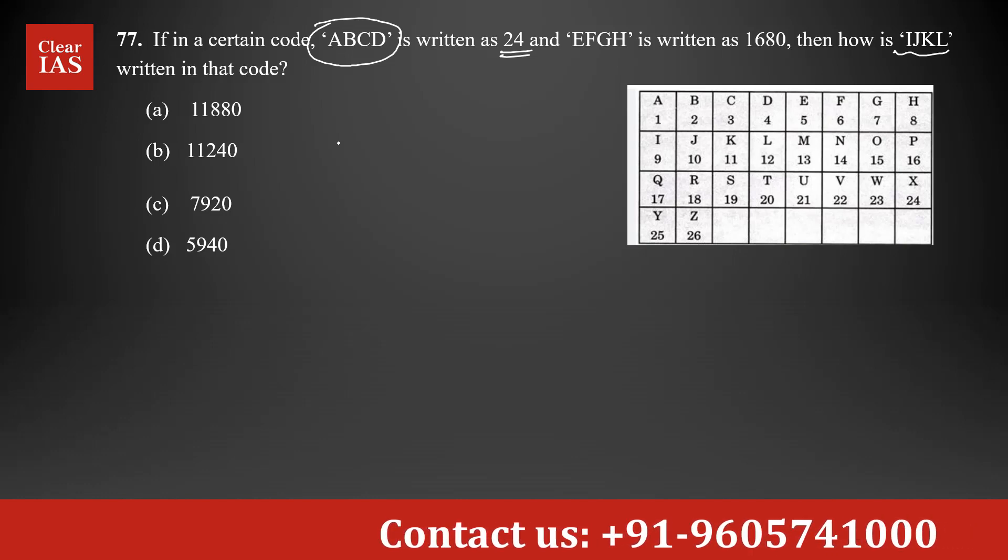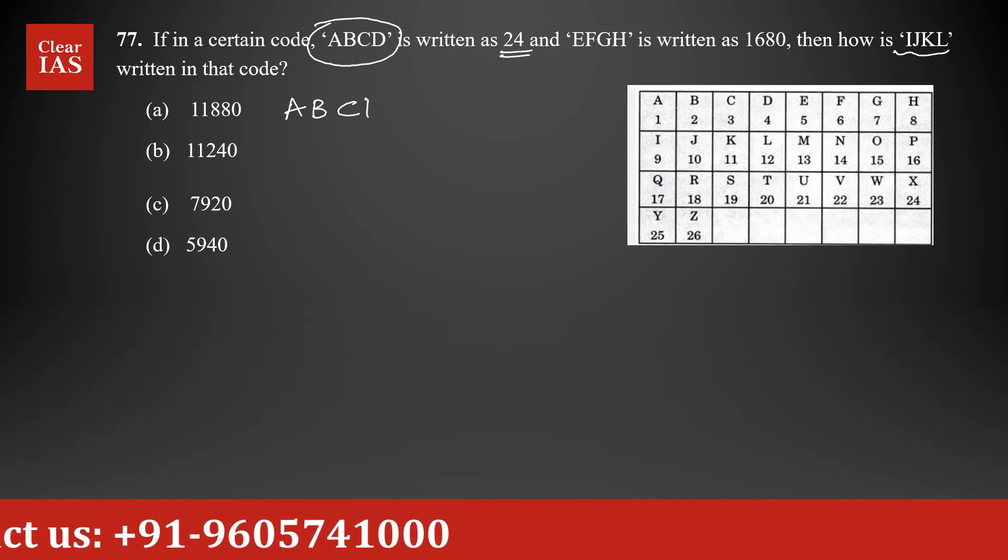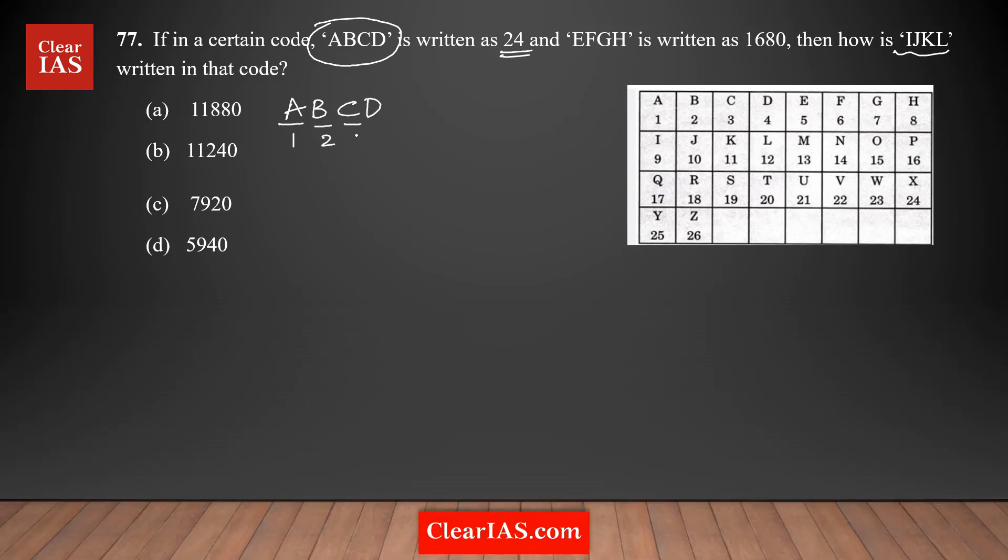Let's start with the first series, ABCD. The corresponding positions are A is 1, B is 2, C is 3, and D is 4, and you are getting 24. We can clearly see that if you multiply all these numbers, 1 times 2 times 3 times 4, which is 4 factorial, which is 24.